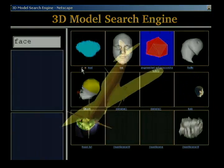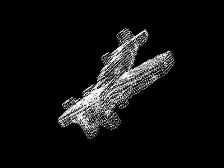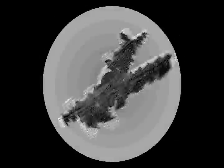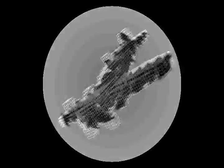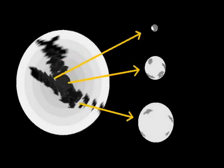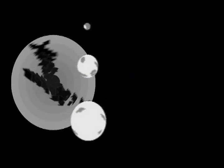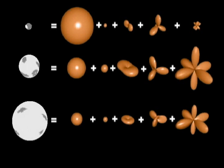In order to find these similar shapes, we perform the following operations. Given a model, we rasterize its polygons into a voxel grid. Treating it as a function defined in 3-space, we decompose the voxel grid into a collection of functions defined on concentric spheres, indexing the functions by radius. We then decompose each of these functions as a sum of harmonic functions of different frequencies, analogous to a Fourier decomposition.